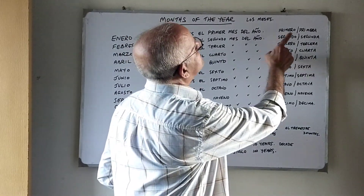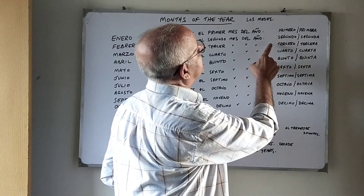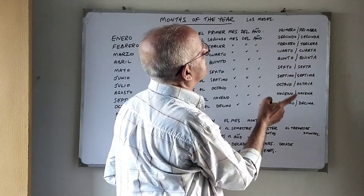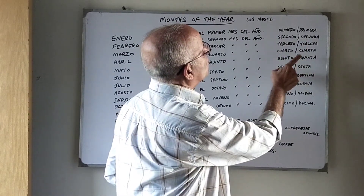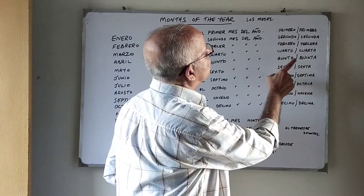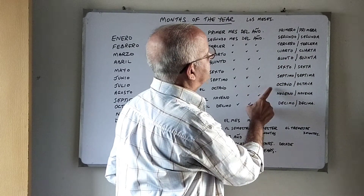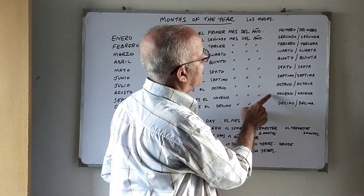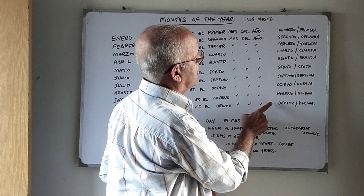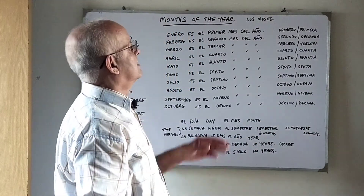Segundo, segunda — masculine, feminine. Tercero, tercera, and so on. Cuarto, cuarta. Quinto, quinta. Sexto, sexta. Séptimo, séptima. Octavo, octava. Noveno, novena. Décimo, décimo and décima. So another set of vocabulary for you to learn.